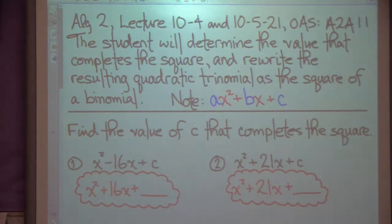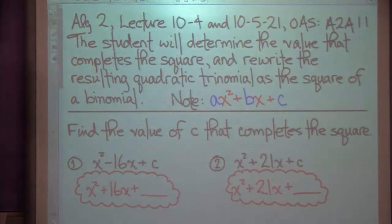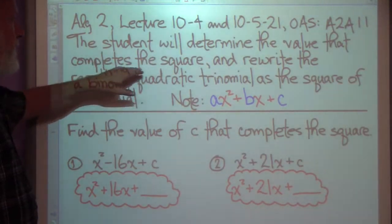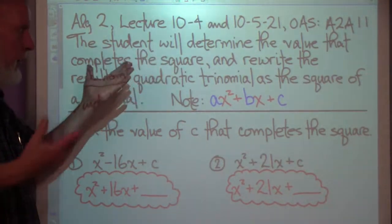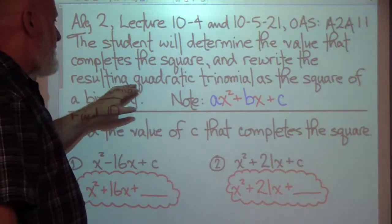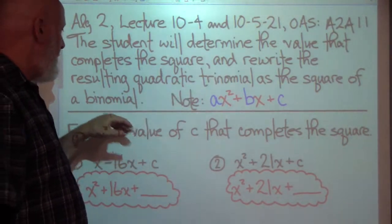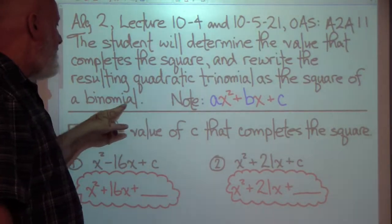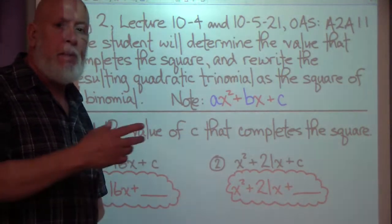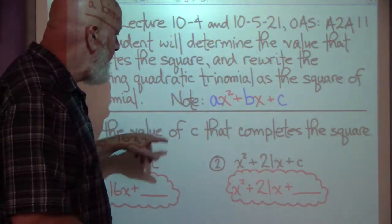All right. Looks like we've got Algebra 2, Lecture 10.4 and 10.5, OSA 2A11. The student will determine the value that completes the square in a quadratic trinomial and rewrite the resulting quadratic trinomial as the square of a binomial. Sounds a little bit confusing, but we'll work through and see what all this means.